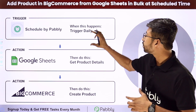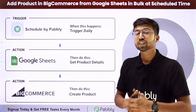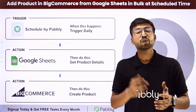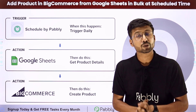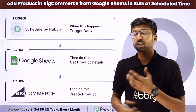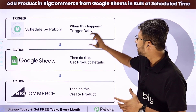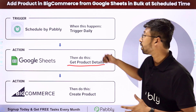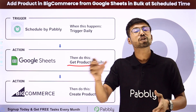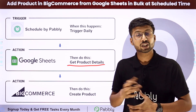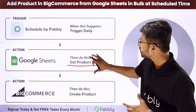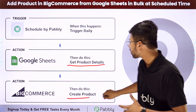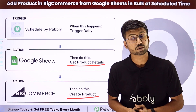In this automation, first we are going to set up a trigger as 'Scheduled by Pabbly.' This automation workflow will run daily, get the product details from our Google Sheet for all products which are ready to publish, and then add those products to our BigCommerce store.